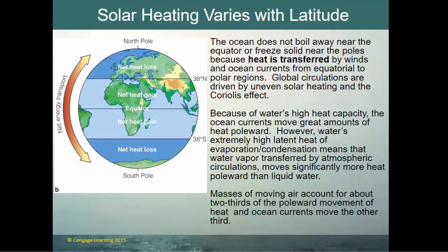The ocean doesn't freeze at the poles or boil at the equator because heat is transferred by winds and ocean currents. Global circulations are driven by uneven solar heating and the Coriolis effect. Because of water's high heat capacity, ocean currents move great amounts of heat poleward. Water's high latent heat of evaporation means atmospheric water vapor transport moves even more heat poleward. Atmospheric circulation accounts for about two-thirds of poleward heat movement; ocean currents move about one-third.